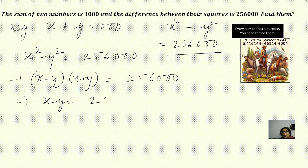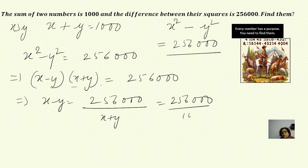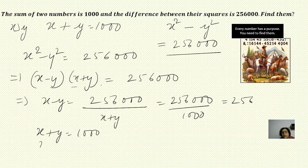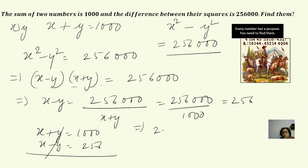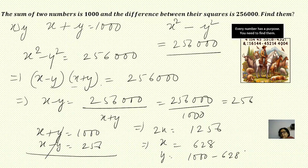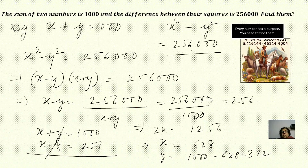From the first equation we replace x plus y with 1000. So x minus y equals 2,56,000 divided by 1000, which equals 256. Now we have x plus y equals 1000 and x minus y equals 256. Adding them gives 2x equals 1256, so x equals 628. Then y equals 1000 minus 628, which equals 372. You can verify: 628 plus 372 equals 1000, and 628 squared minus 372 squared equals 2,56,000.